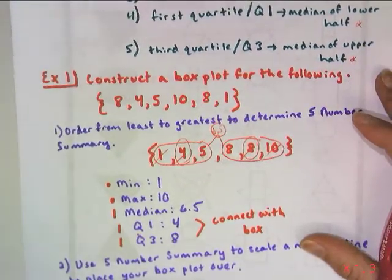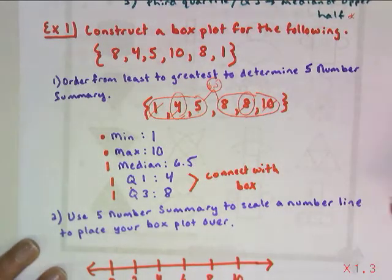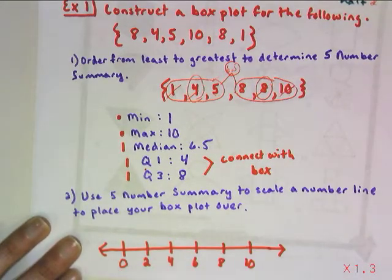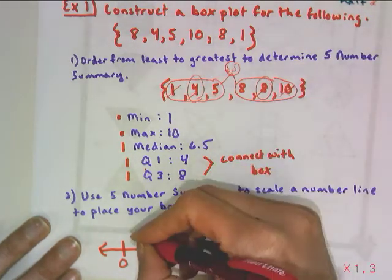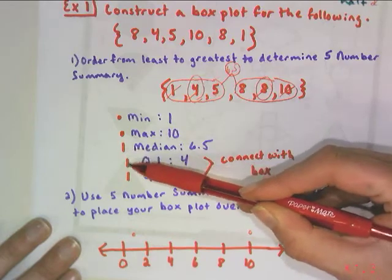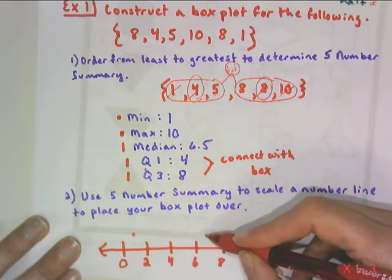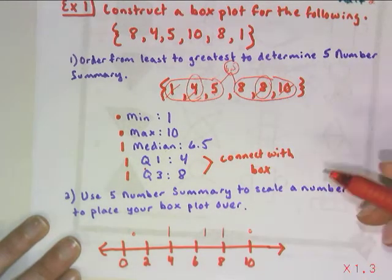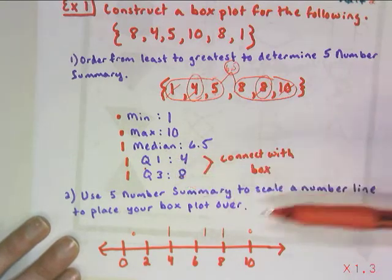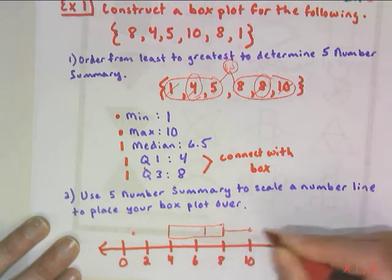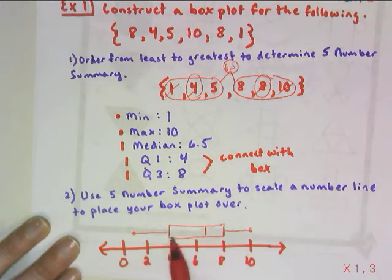So here's my five-number summaries. Then when you make your box, you're going to make sure that you look at your highest and your lowest values, and you're going to scale a number line according to that. So my value goes from 1 to 10, so I don't need to make a number line going from 0 to 50. A good scale for this would be counting by 2s from 0 to 10. Then you're going to put a dot at the minimum and the maximum. And then the other three, the median and the other medians, are going to have a vertical line over them. You're going to connect the Q1 and the Q3 with a box. Your whiskers extend from the upper quartile to the maximum, and then from the lower quartile to the minimum.